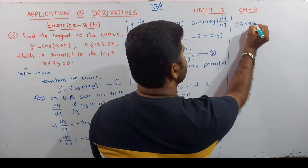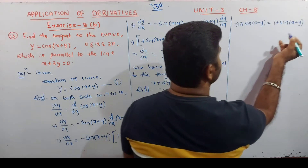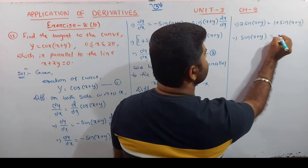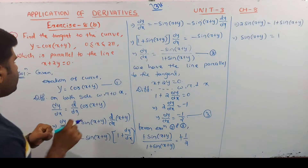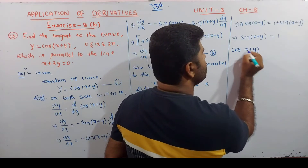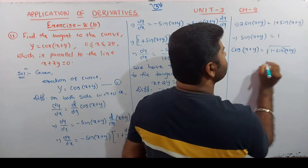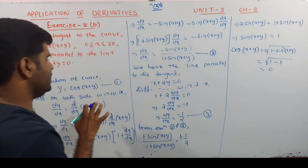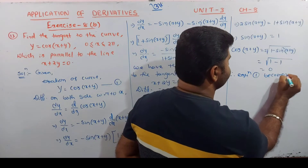From equations 2 and 3: -sin(x+y) / (1 + sin(x+y)) = -1/2. So 2·sin(x+y) = 1 + sin(x+y), which gives sin(x+y) = 1. From equation 1, y = cos(x+y). Since sin(x+y) = 1, cos(x+y) = 0, so y = 0.